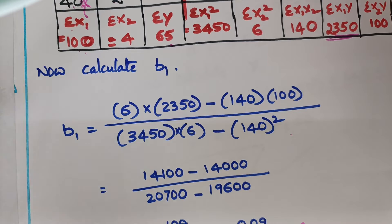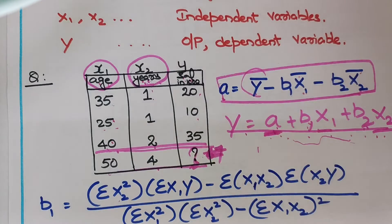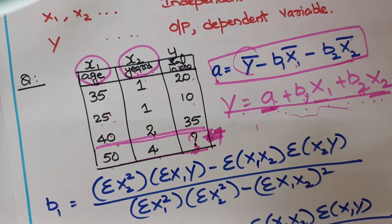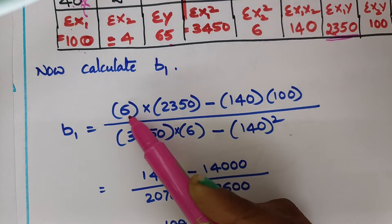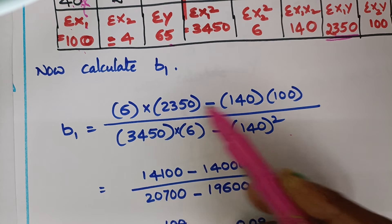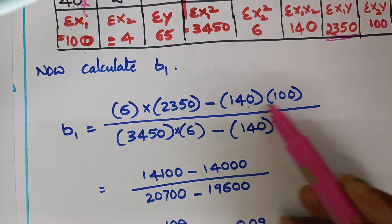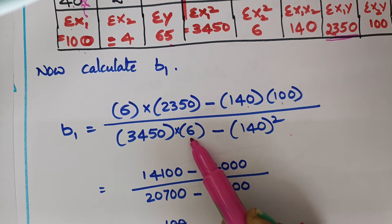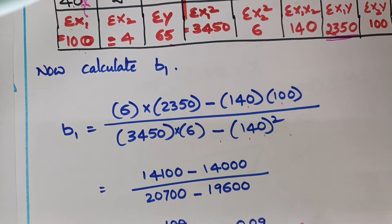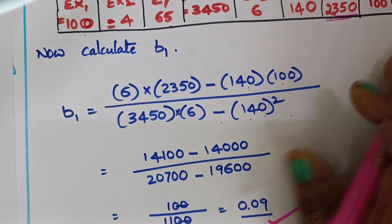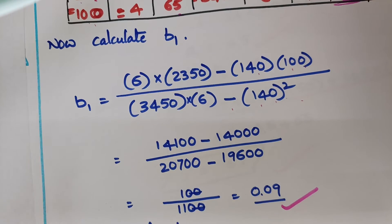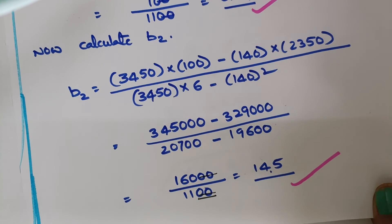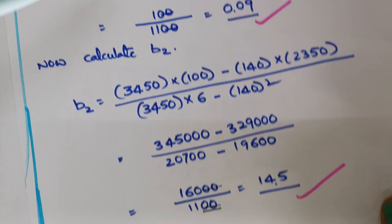After that, calculate the b1 value using the b1 formula. Summation x2-squared is applied, along with summation x1·y minus summation x1·x2, summation x2·y, divided by summation x1-squared, summation x2-squared minus summation x1·x2 whole squared. Applying all these calculations gives b1 equal to 0.09. In the same way, calculate b2, which gives b2 equal to 14.5.